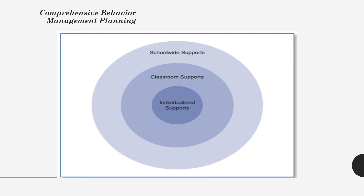Behavioral and academic programming are key aspects in the prevention of and reaction to problem behavior in the classroom. The third and largest circle represents school-wide support designed to prevent and respond to behavior difficulties at the school level. These concentric circles are dependent on one another and form a comprehensive approach to behavior management. This comprehensive approach is important given the recent shifts by schools from a reactive approach to behavior management to a proactive one.